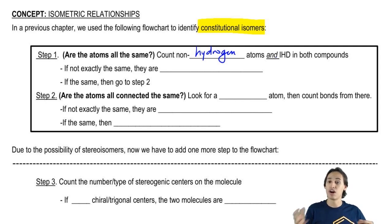We said if they were not exactly the same, then they were different compounds. And then we said that if they were the same, then you would go to step two.